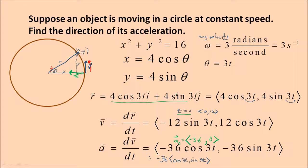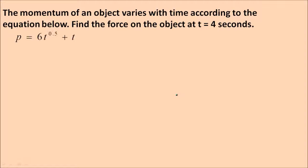Let's take a different kind of example. The momentum of an object, we know what that is, mass times velocity. But wait, can't mass change? Can't velocity change? Now we're going to need calculus. Varies with time according to the equation below. The momentum is 6 times time to the 0.5 power, that's square root of time, plus time. Find the force on the object at t = 4 seconds.